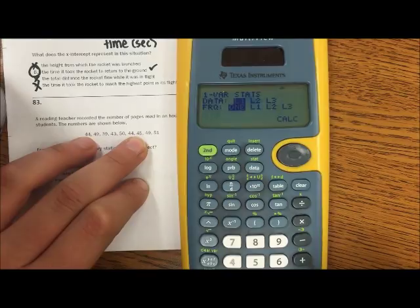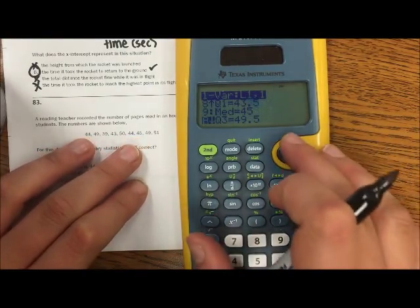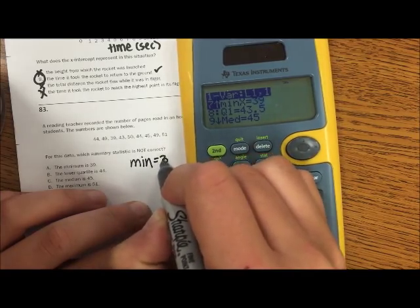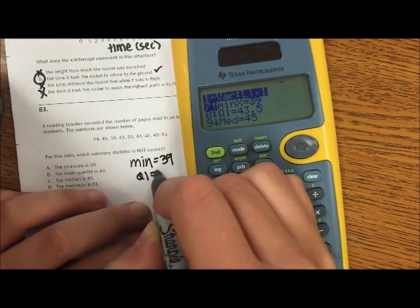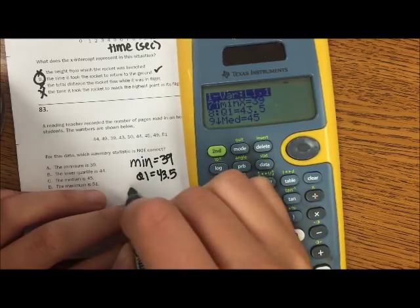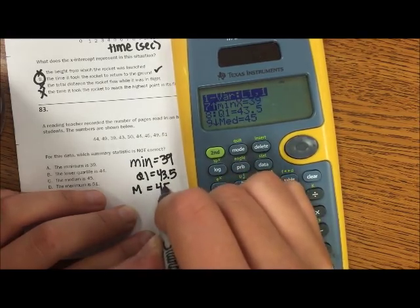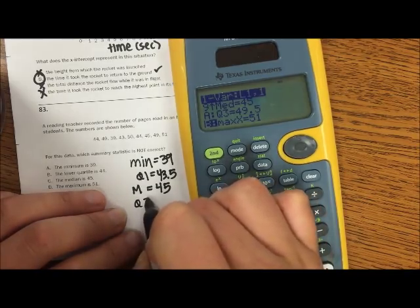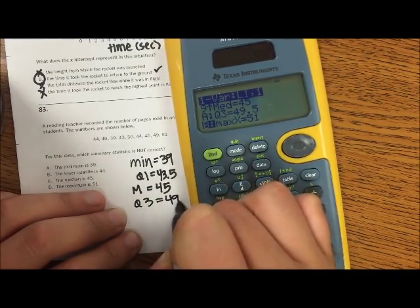And then let's do our one variable stats, and let's go find our five number summary. So min 39, Q1 43.5, median 45, Q3 49.5, and max 51.